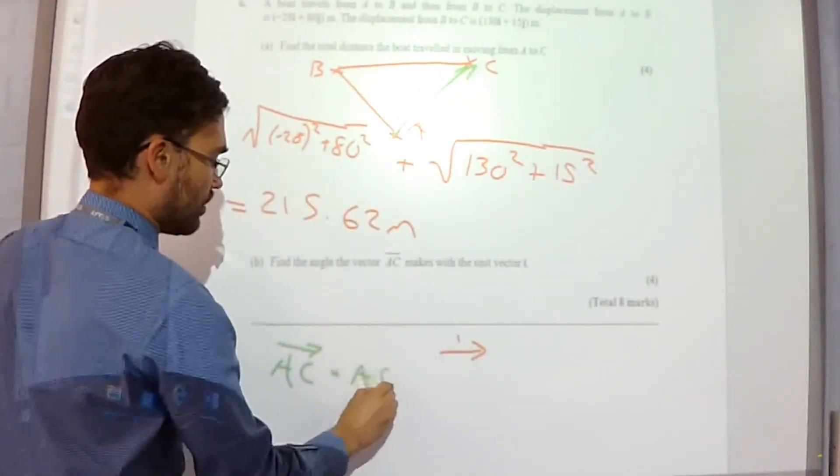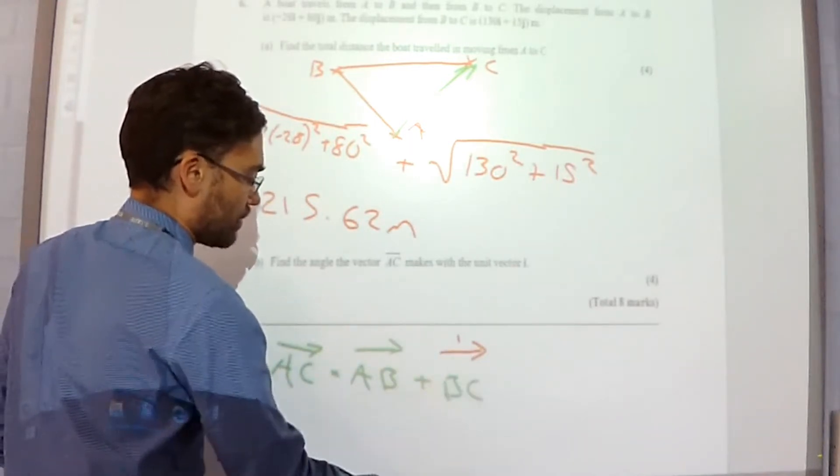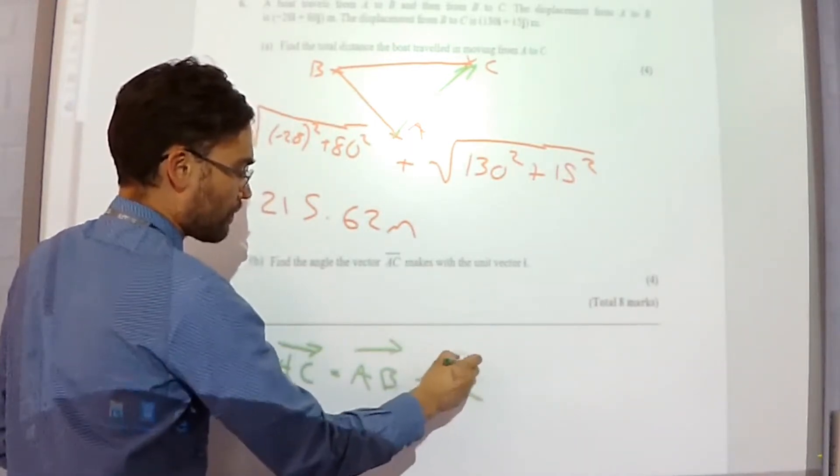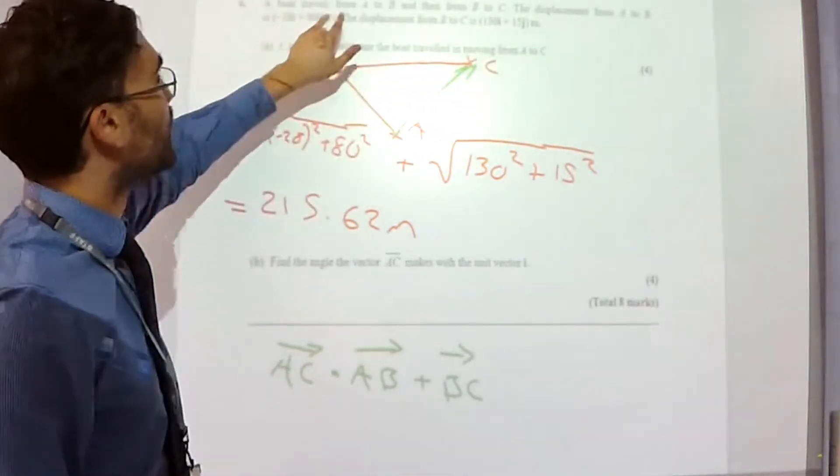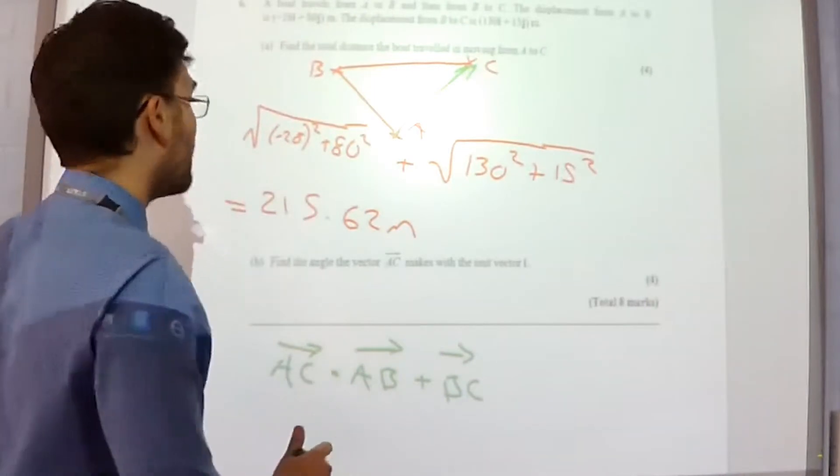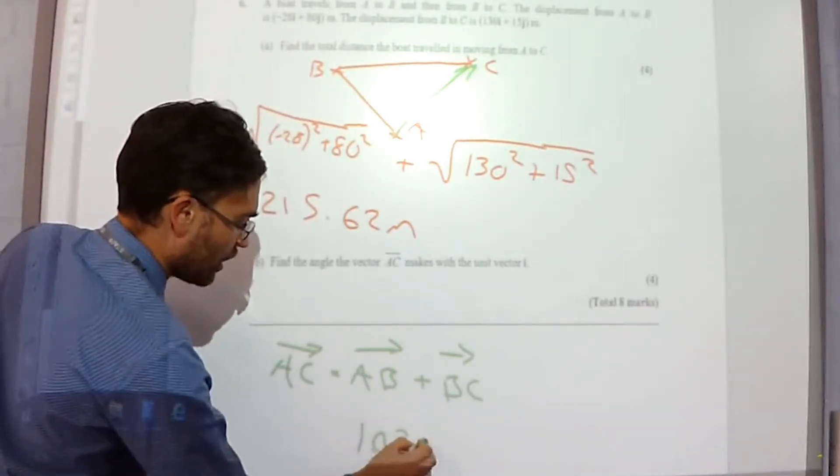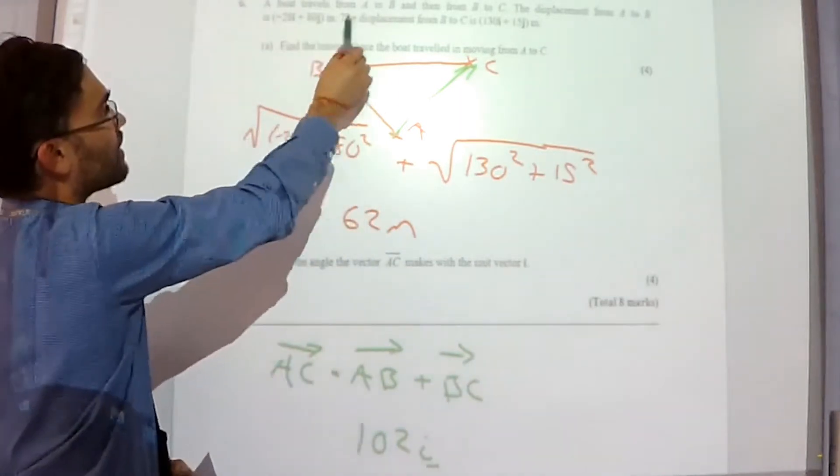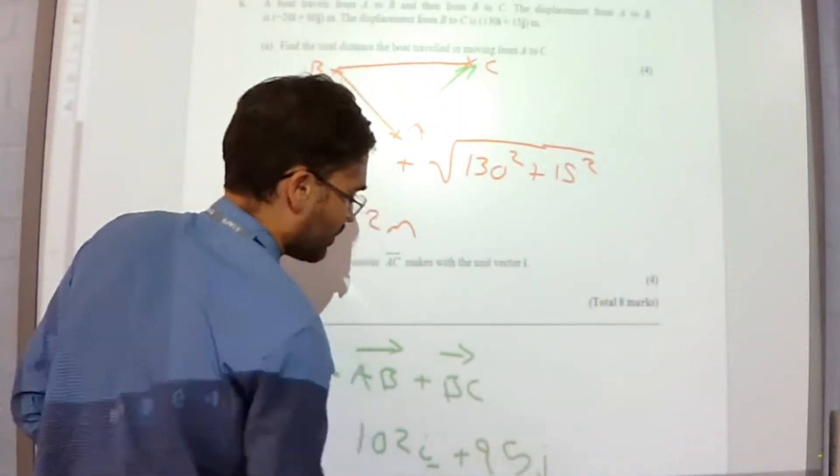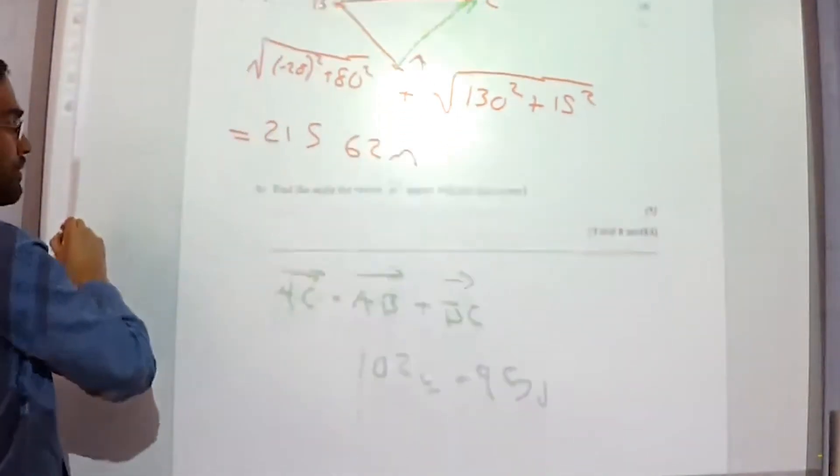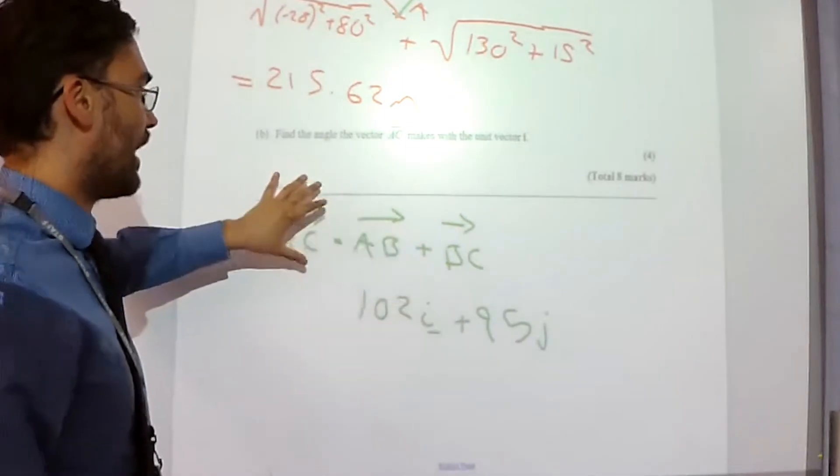So A to C. So this vector added to this vector, negative 28, 130 is going to be 102I. And 80 and 15 is 95J. So that is the vector A to C.